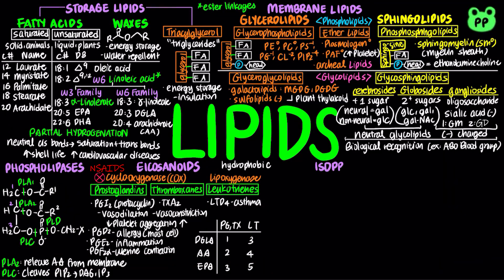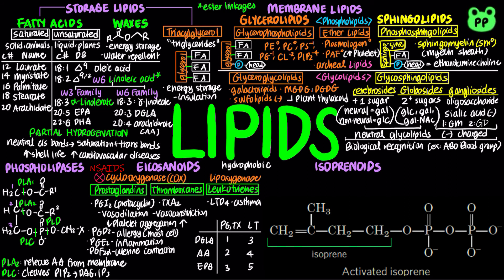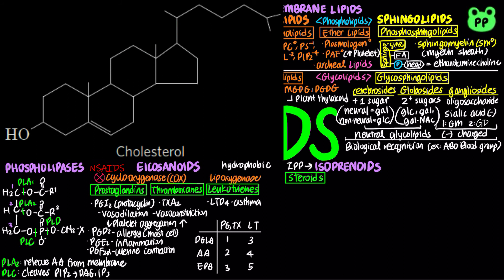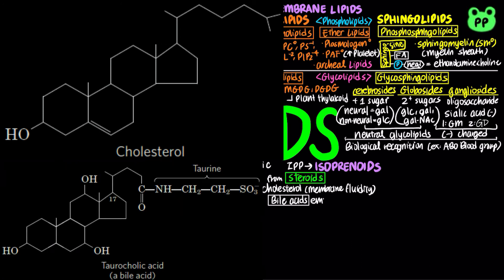Isoprenoids, also known as terpenoids, are a diverse class of lipids derived from activated 5-carbon isoprene, known as delta-3-isopentenyl pyrophosphate (IPP). A major class of isoprenoids are steroids, which consist of four fused rings. Cholesterol is an important steroid that functions in maintaining membrane fluidity, while also serving as a precursor to diverse biological molecules.